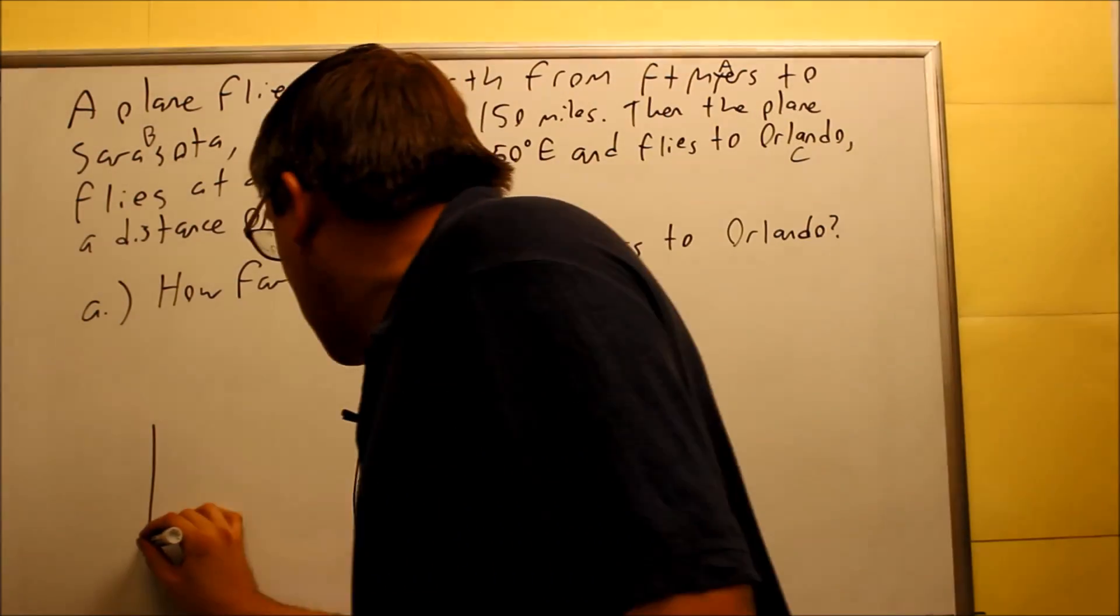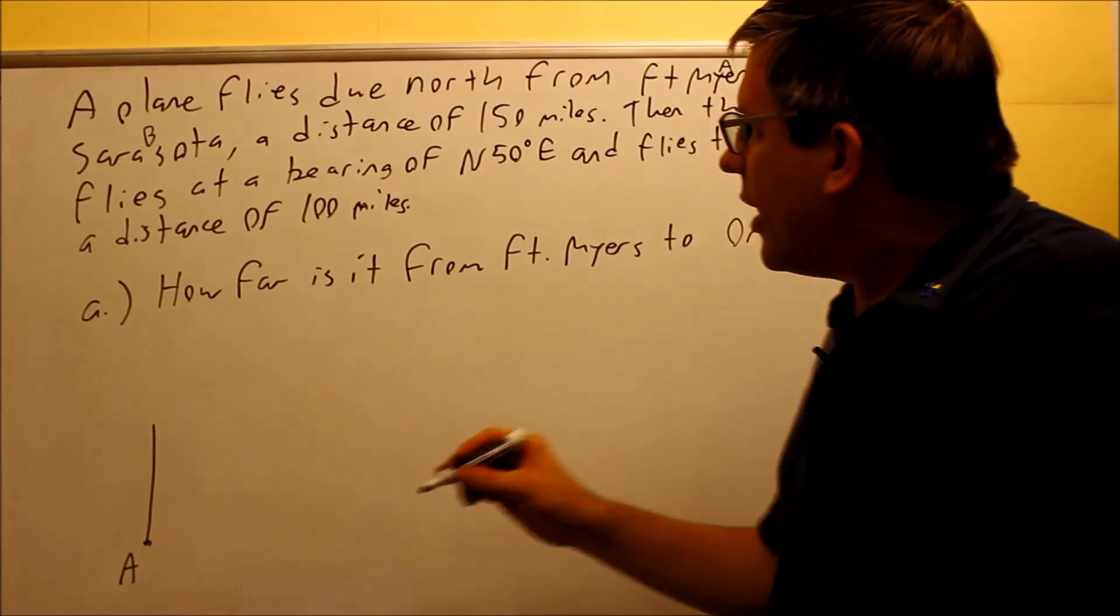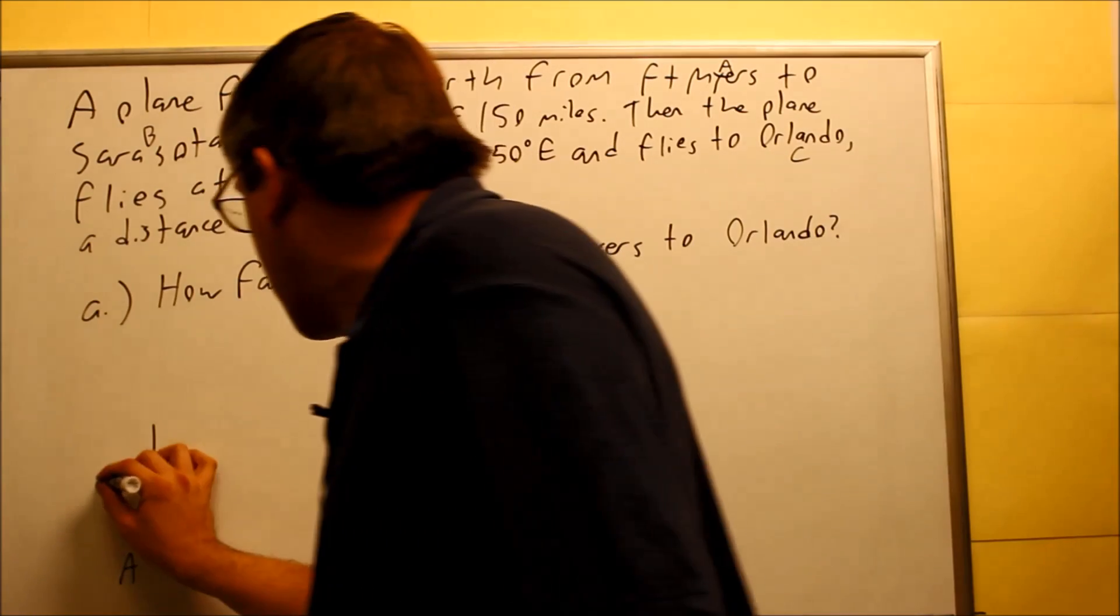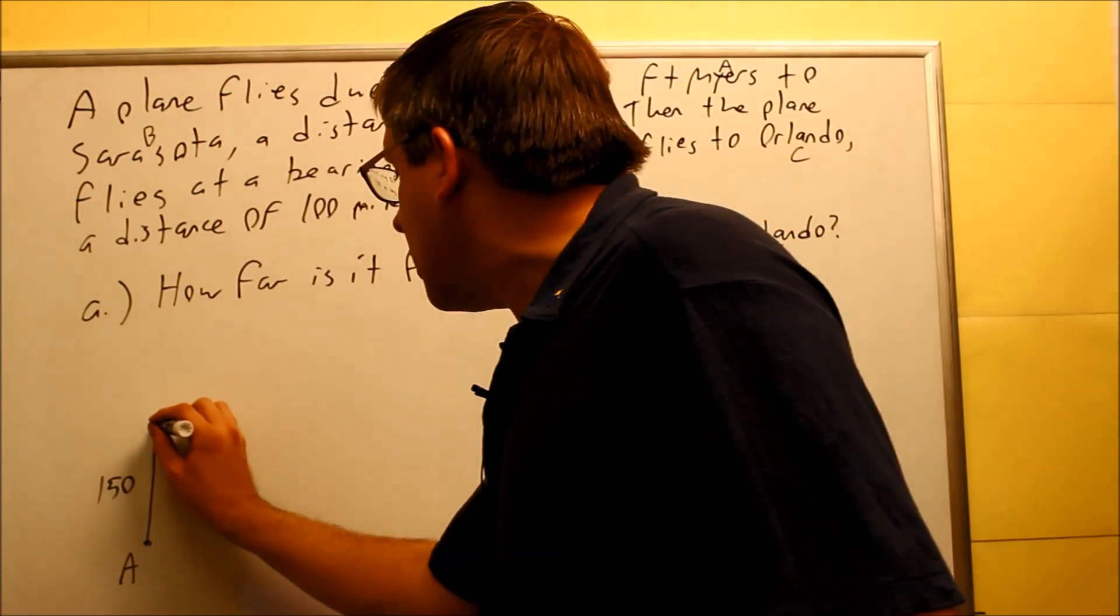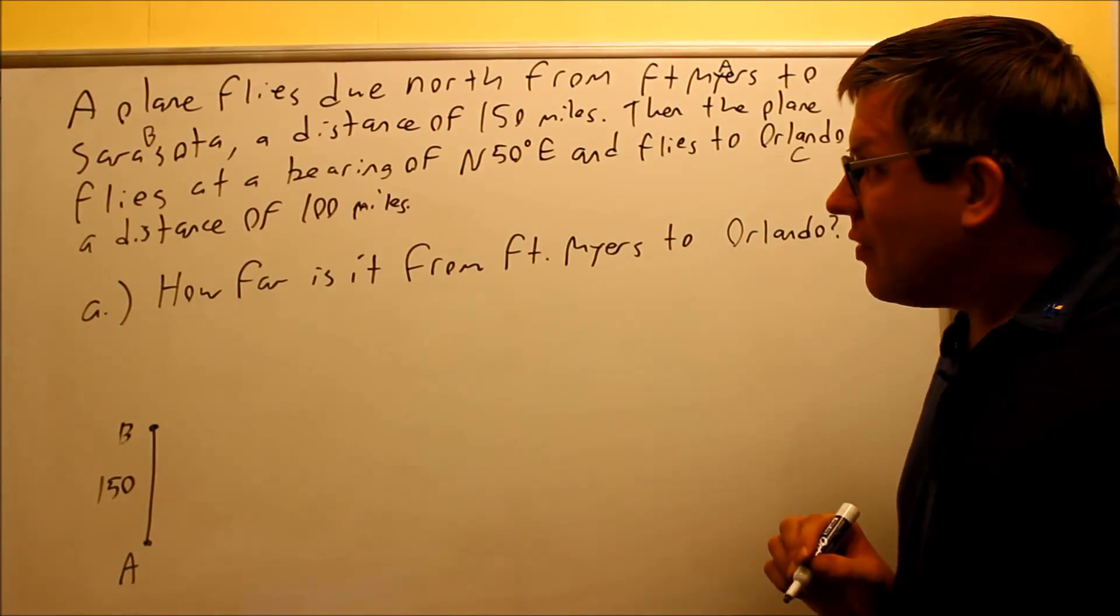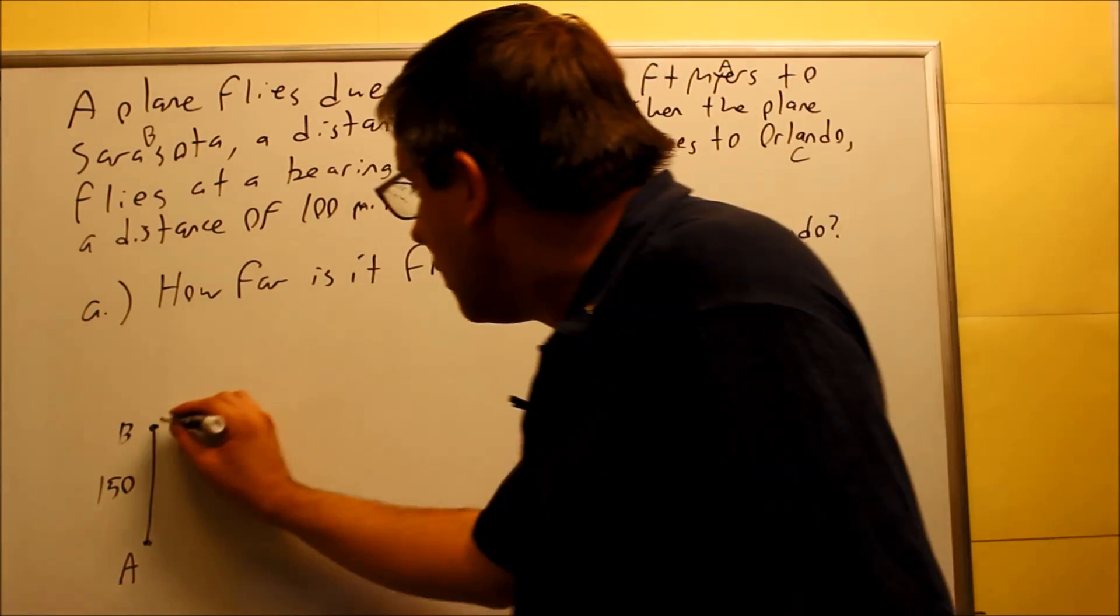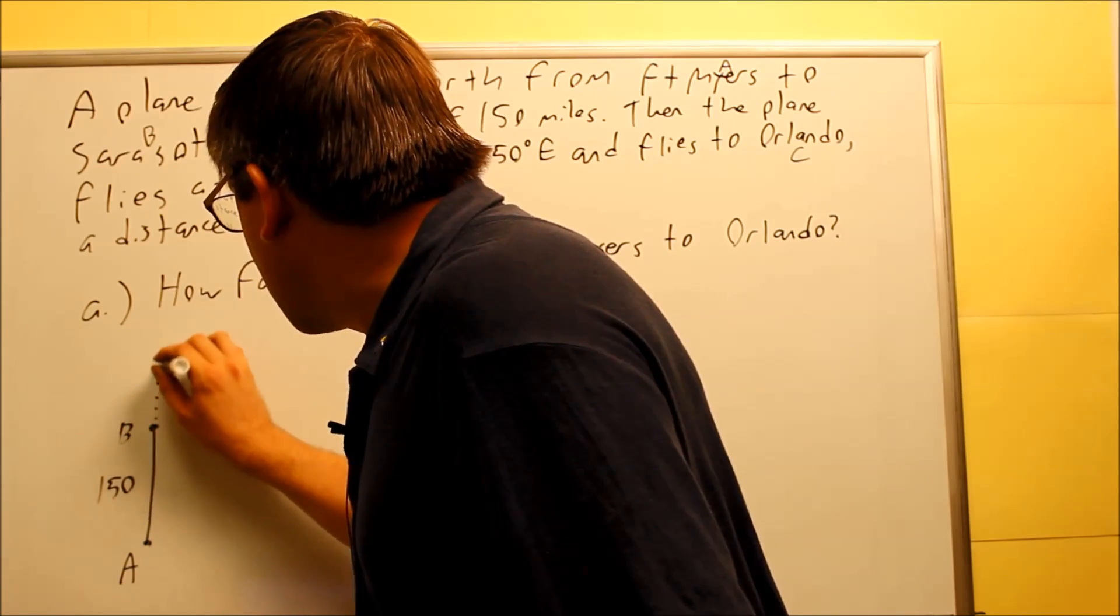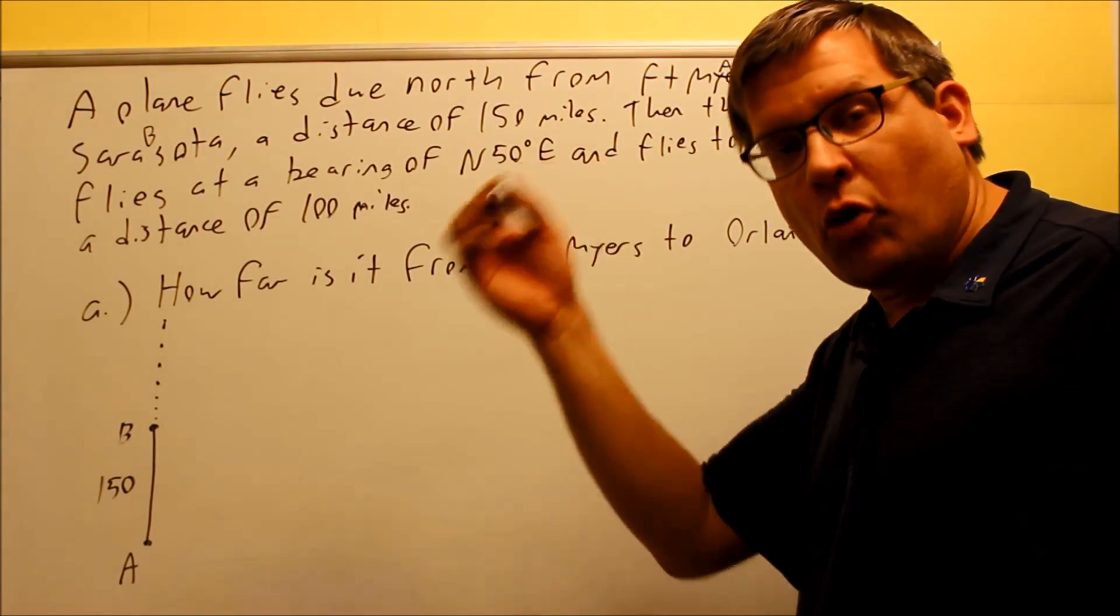Here is A. It starts at A, Fort Myers. It's going to fly north to Sarasota, and that's 150 miles. So I'm going to put 150 right here. That's going to be point B right there, and point B is Sarasota. Then it's going to go on a bearing north 50 degrees east, so I have to measure that from this point right here.